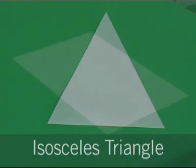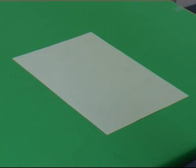Isosceles Triangle. Start with an A size sheet of paper. You need to make two folds.